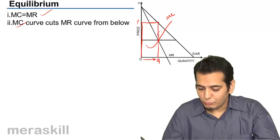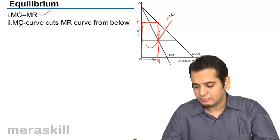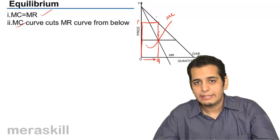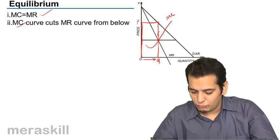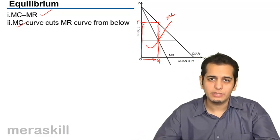For price, we need to go beyond this level and reach till AR. So OQ is the equilibrium quantity, OP is the equilibrium price.